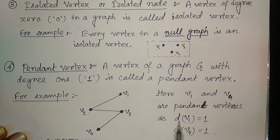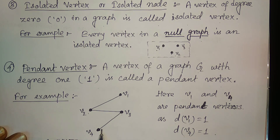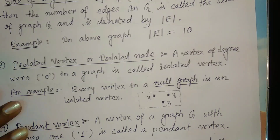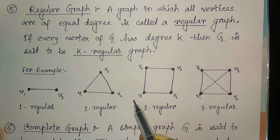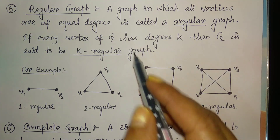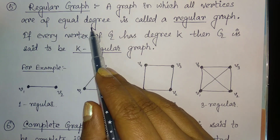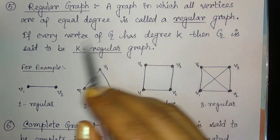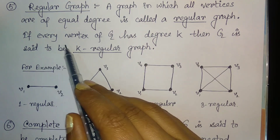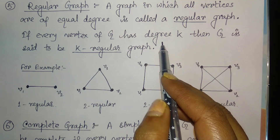Since the degree of v1 is 1, these two vertices are called the pendant vertices. Now, a very important graph: the regular graph. A graph in which all vertices are of equal degree is called a regular graph. If every vertex of g has degree k, then g is said to be a k-regular graph.